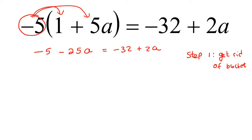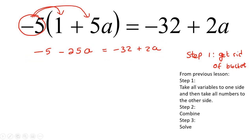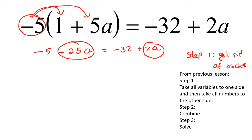From the previous lesson, we can now remember the steps of what to do when you have something like this. We took all variables to one side — the variables are the things with the letters. Those all need to go to either the right-hand side or the left-hand side of the equal sign. I'm going to take all of the variables to the right-hand side.